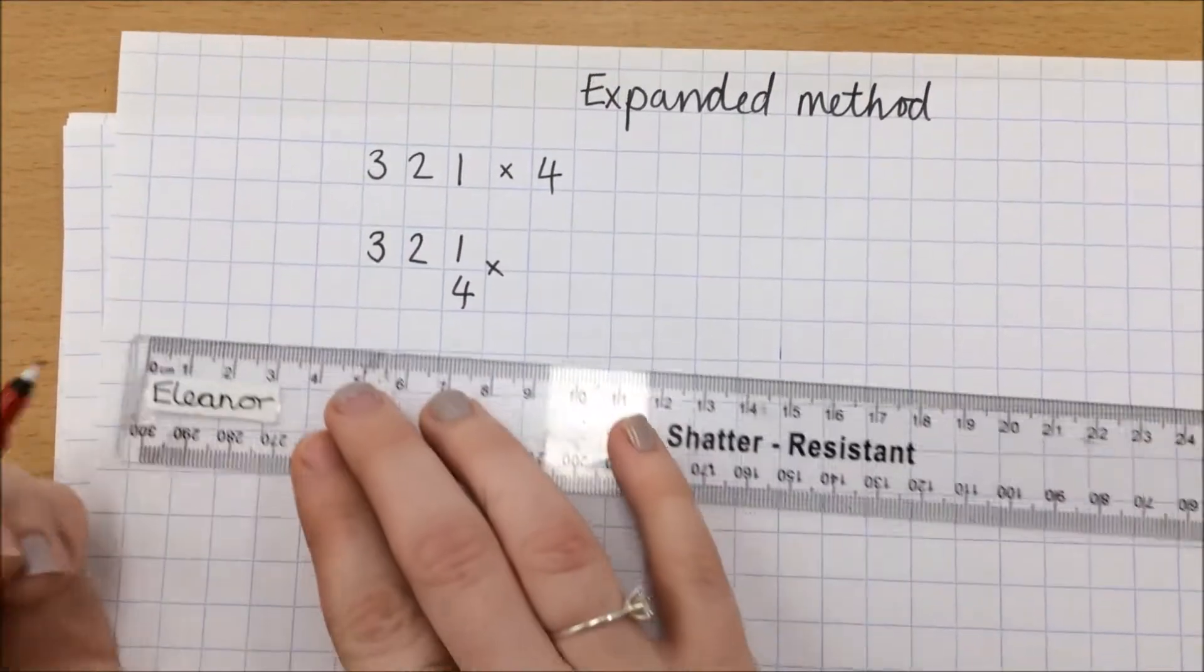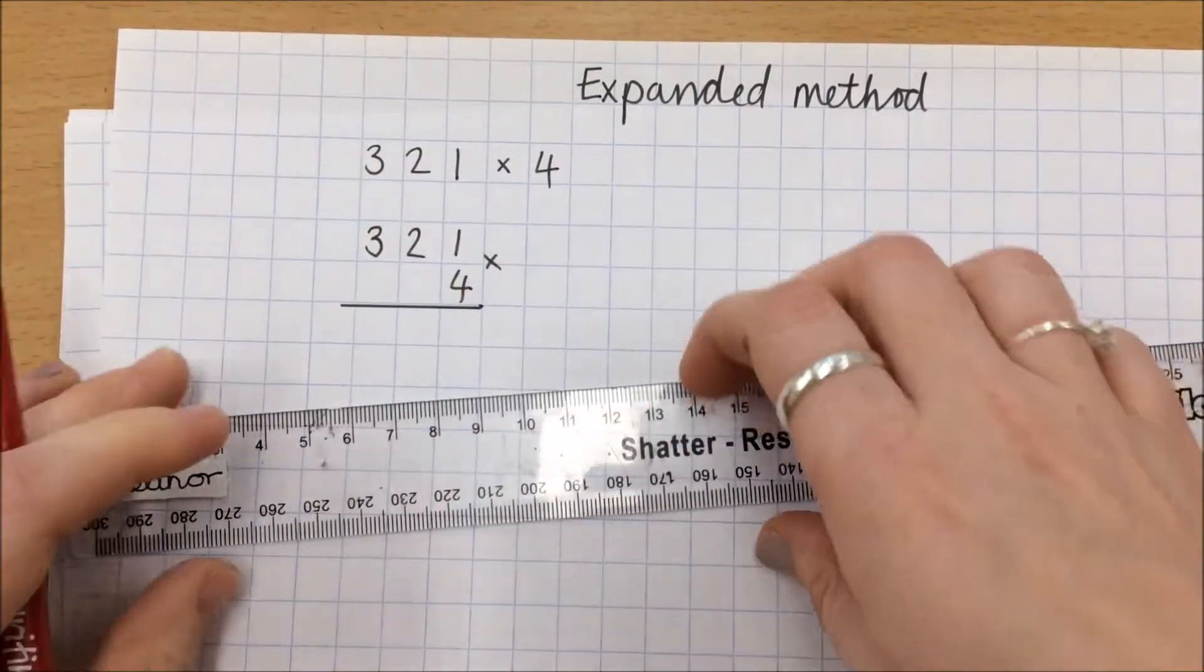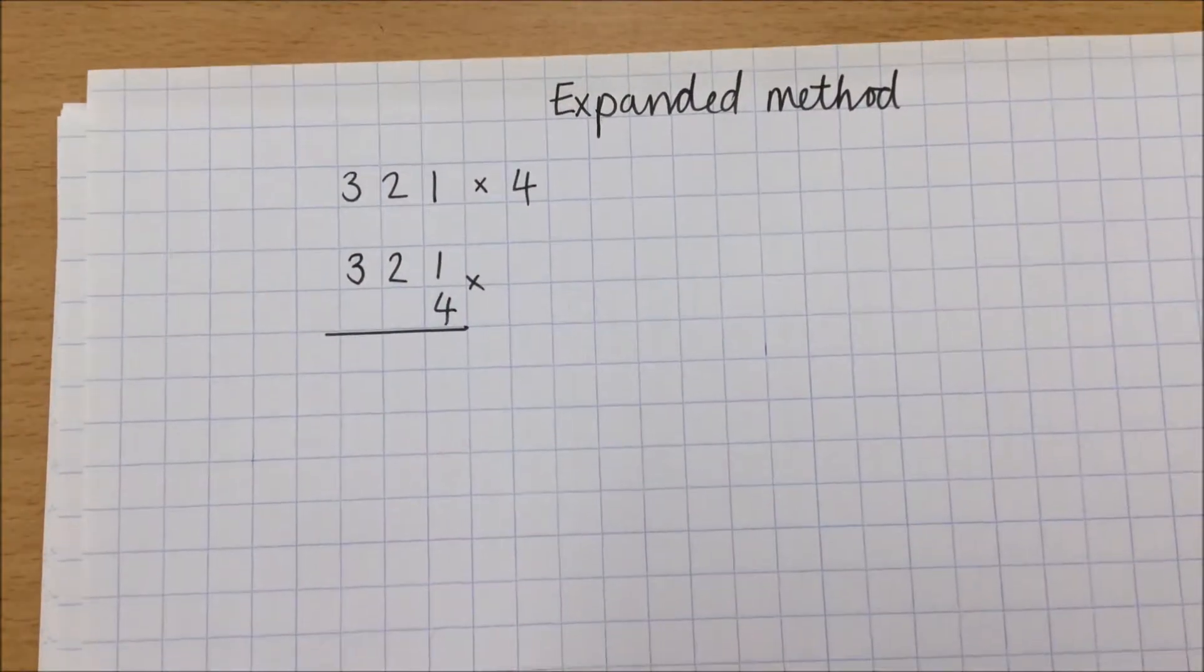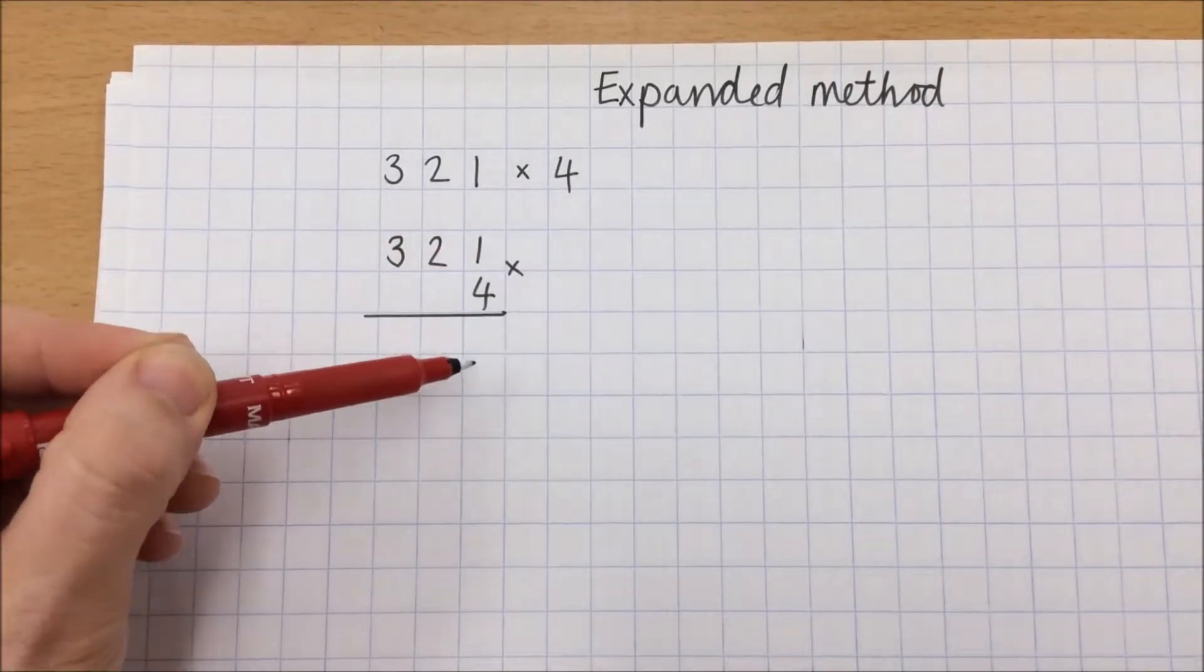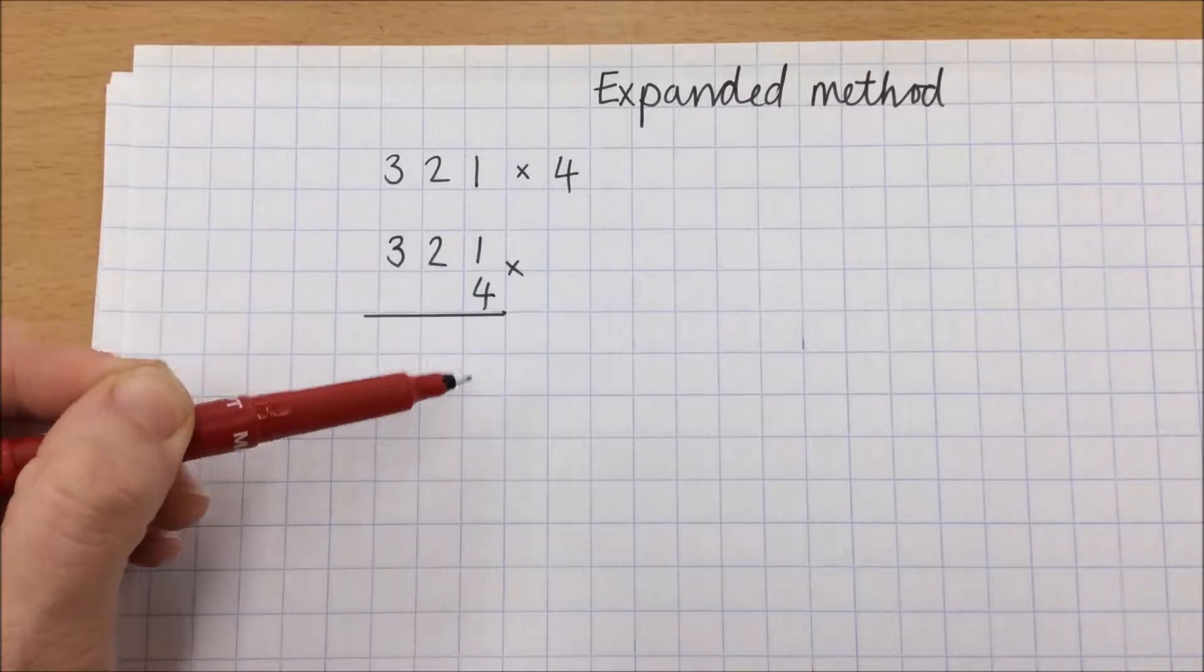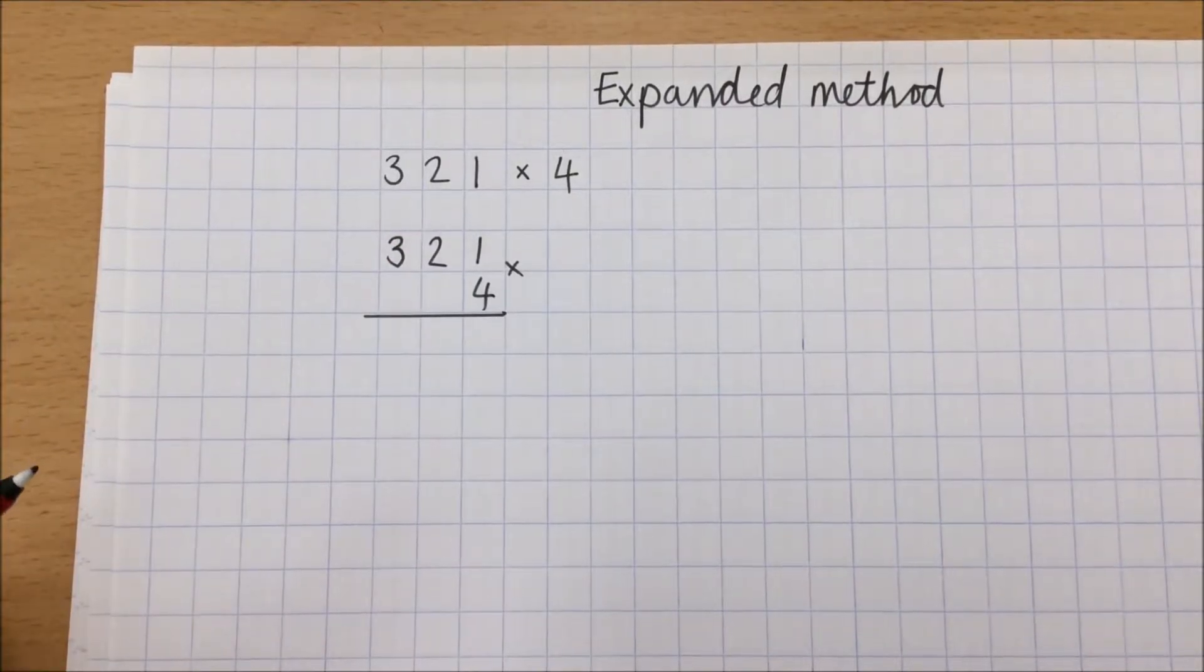So 321 multiplied by 4. You will recognize that the expanded method is still using that concept of partitioning, except this time we're putting the answers vertically, which then leads on really nicely to learning the compact method a bit later on.